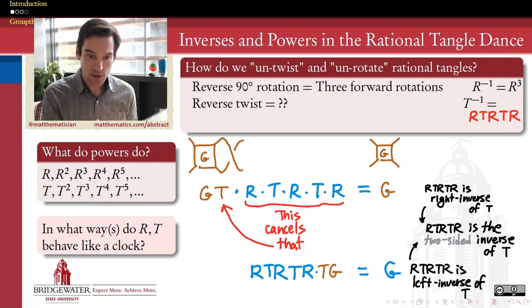Because we haven't yet shown that inverses of elements are necessarily unique. Couldn't an element have more than one inverse? Is this the only way to undo a twist? That we have not proven, and that's something we will have to prove later on down the line.